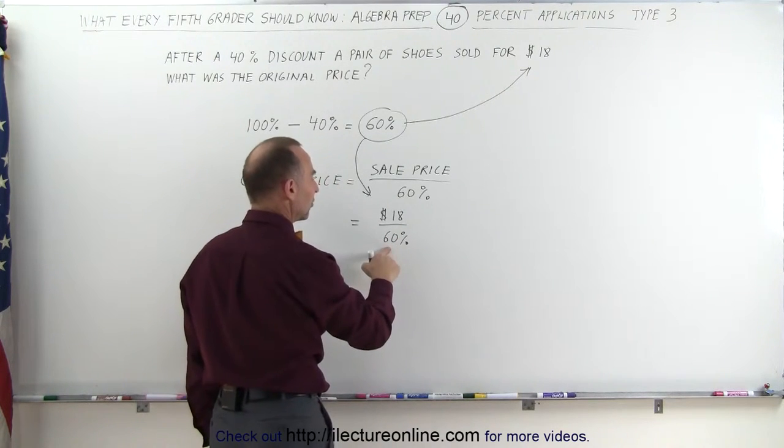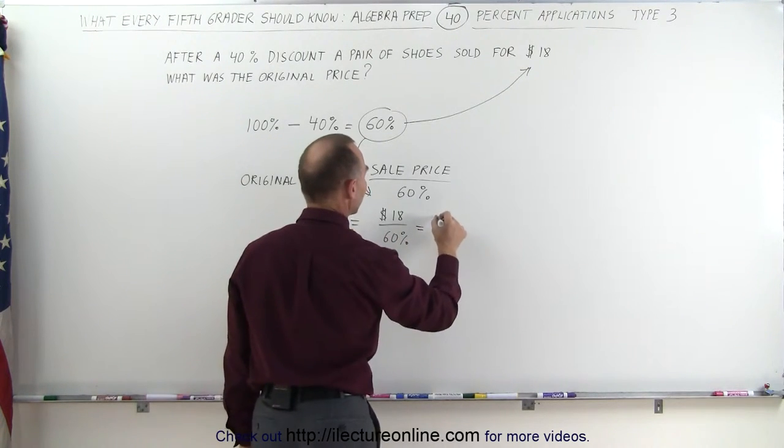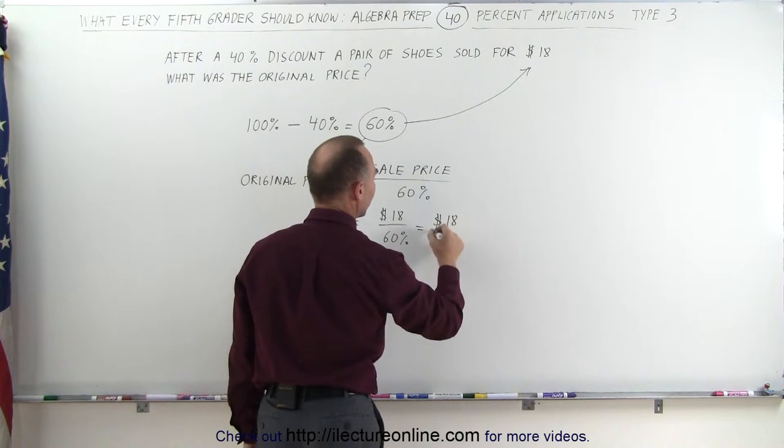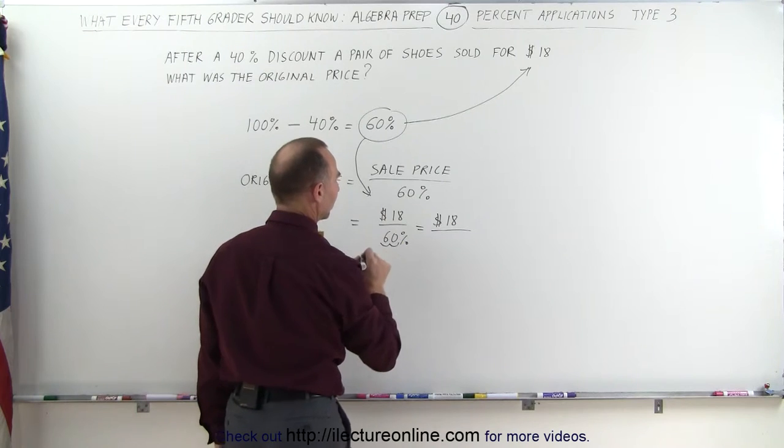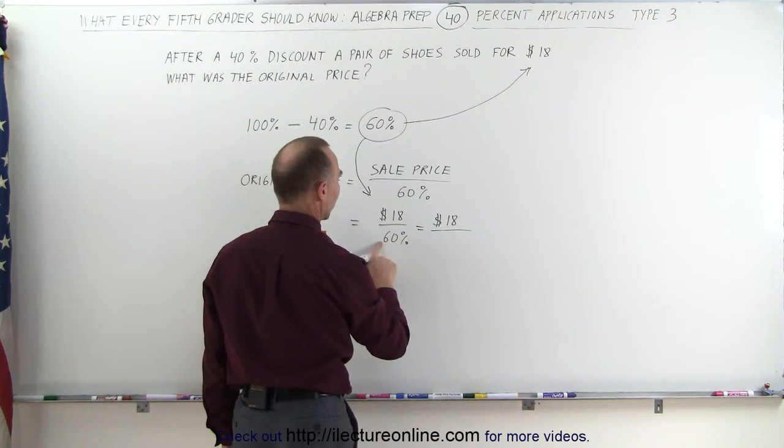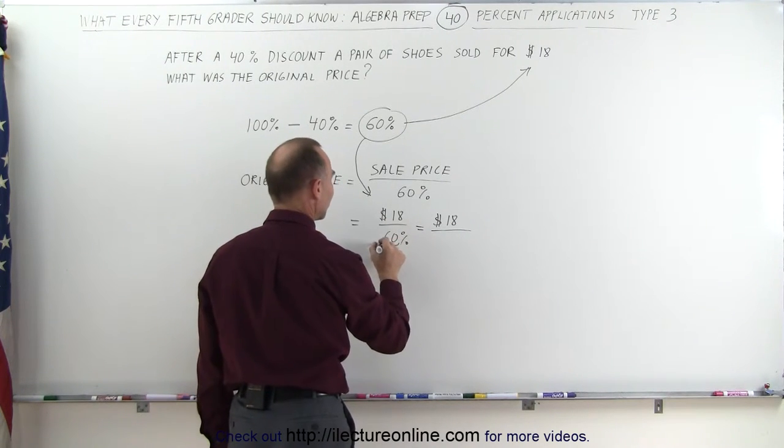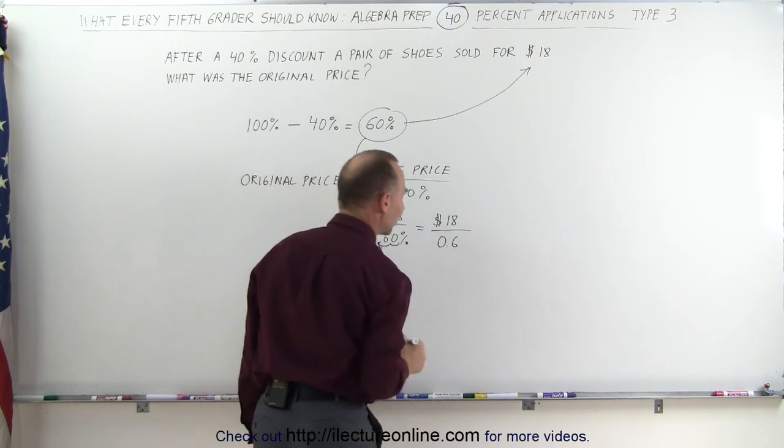And if we then convert the 60% to a decimal, this is equal to $18 divided by—to go to a decimal, we have to move the decimal place over twice. Oops, the wrong direction. We have to go this way twice, and so that becomes 0.6.